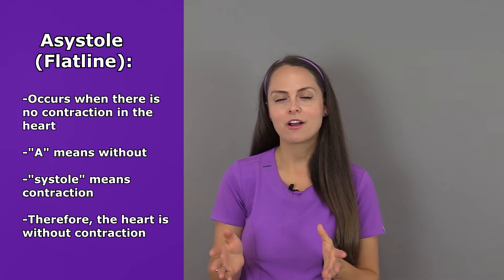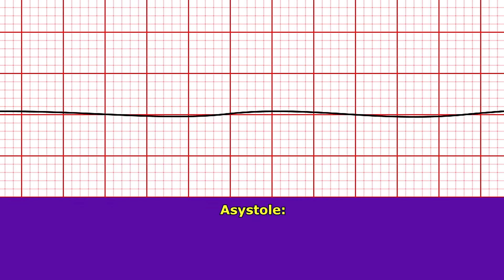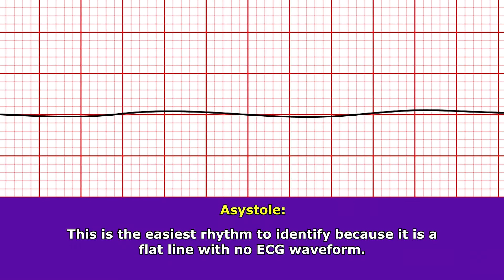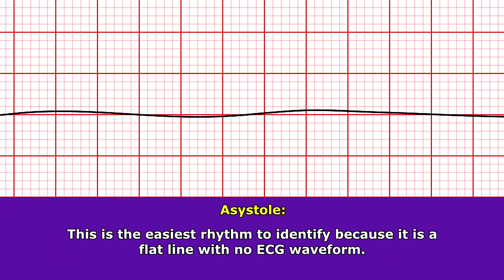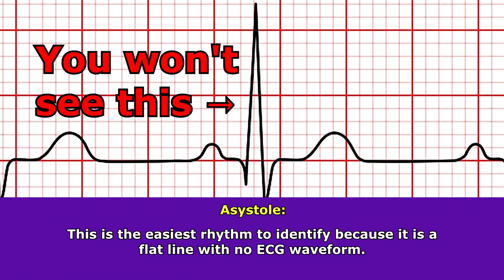What are the characteristics and criteria to tell you that you're dealing with asystole? This rhythm is actually one of the easiest rhythms to identify out of all the rhythms you have to know as a nurse. What it looks like is a flat line on the ECG and there's no ECG waveform. So you're not going to see a PQRST on there at all.